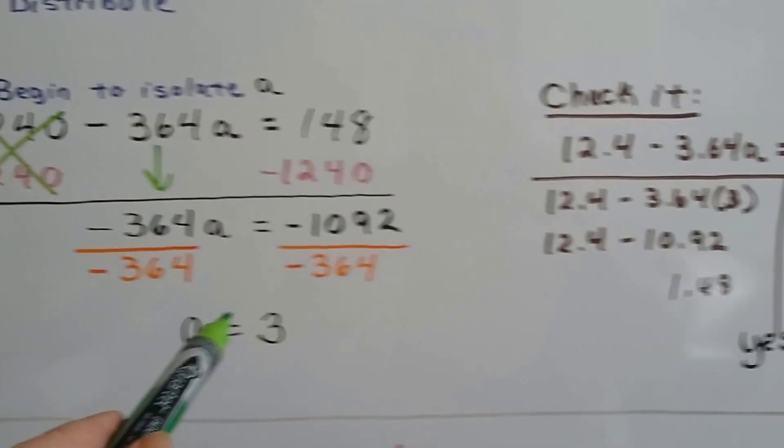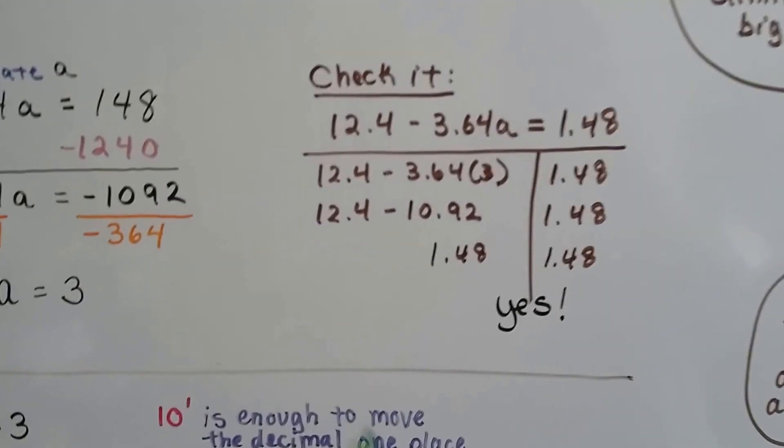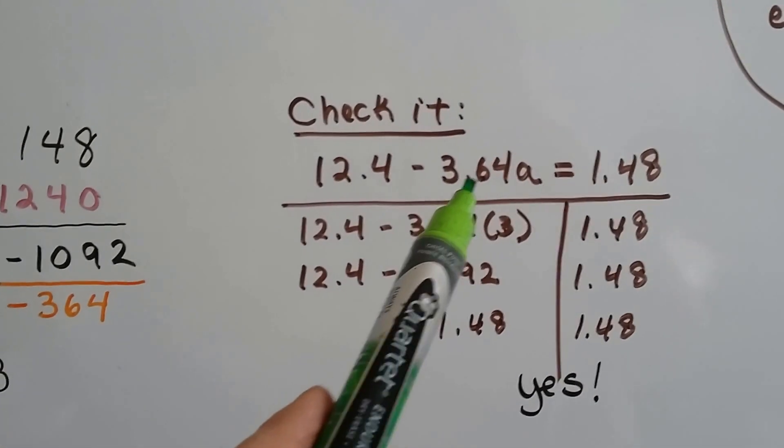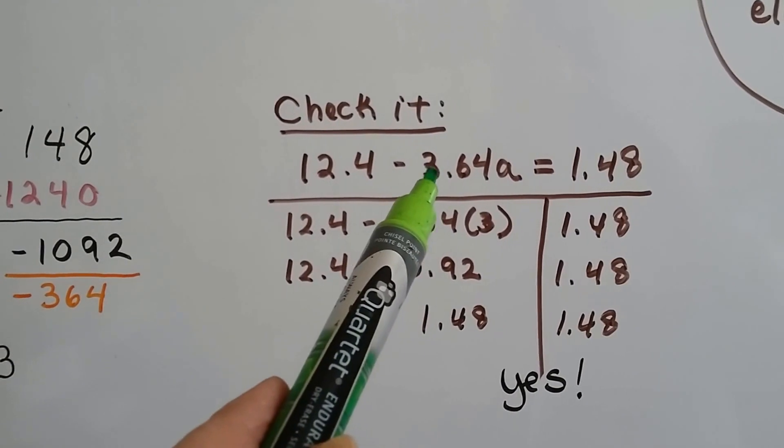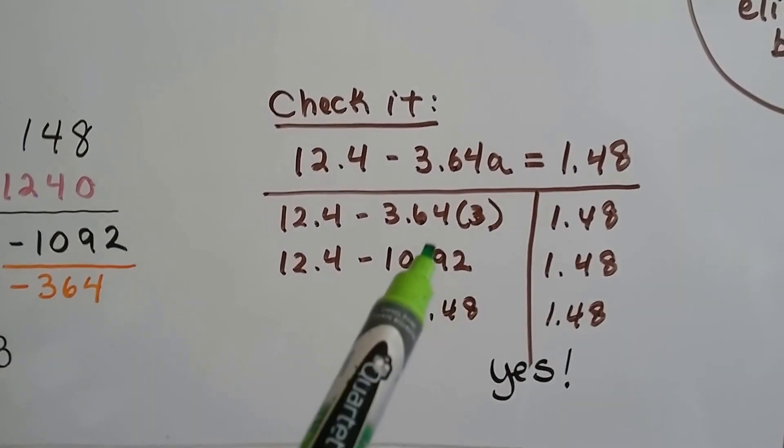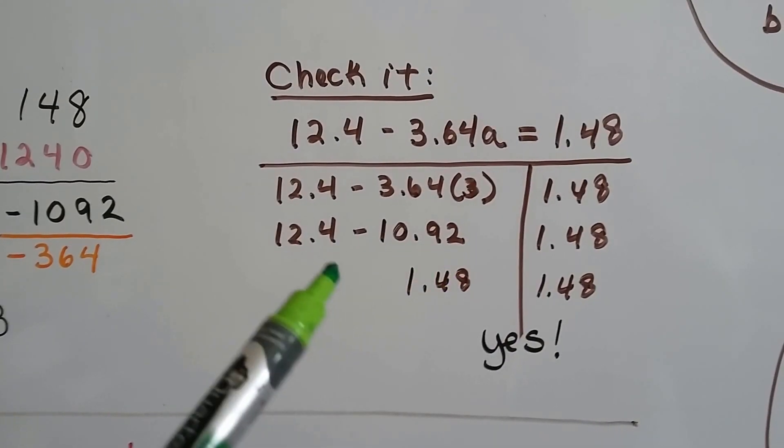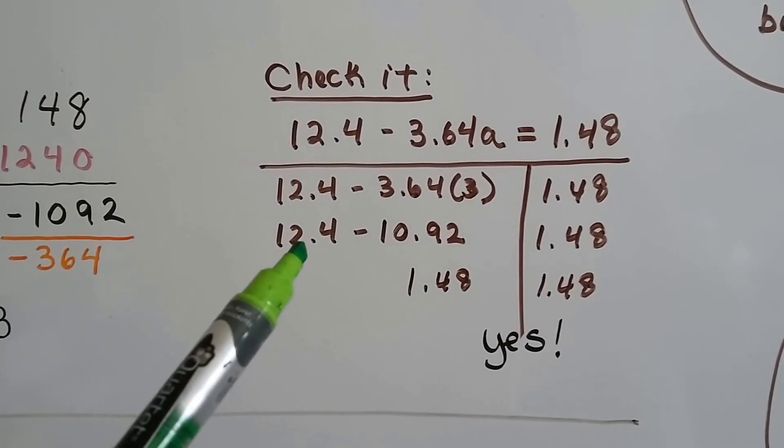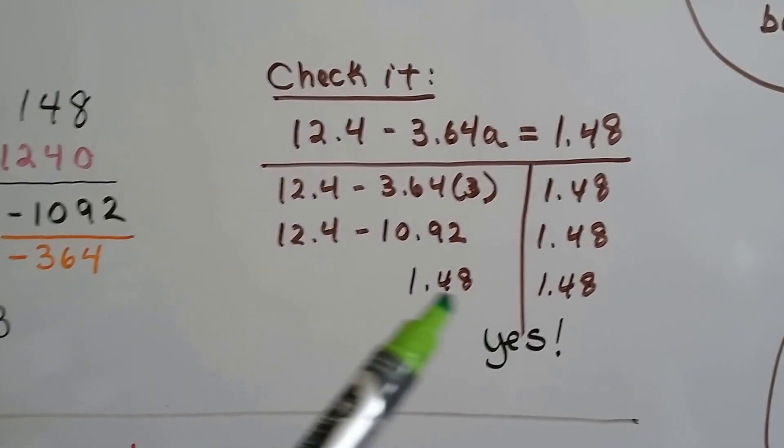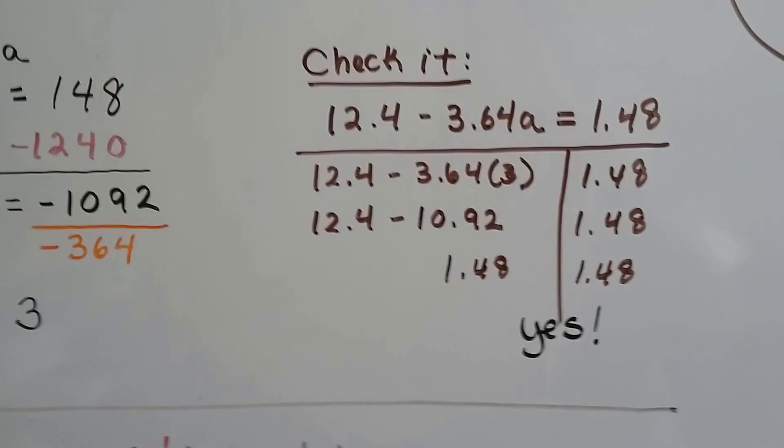We can check it by plugging in 3 for a into the equation. So instead of this 3.64a, we have 3.64 times 3, which comes out to 10.92. And when we subtract it from the 12.4, we do get 1.48. So it worked.